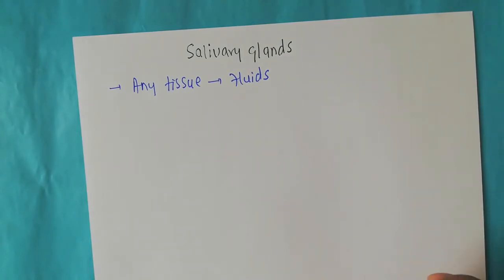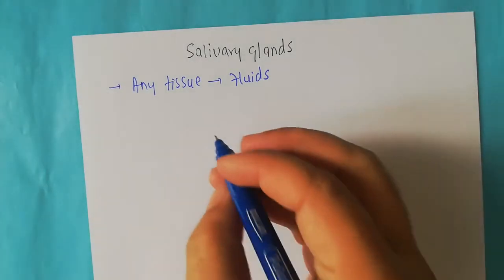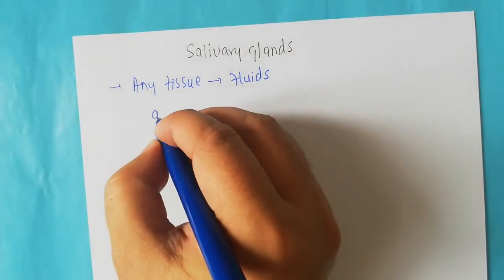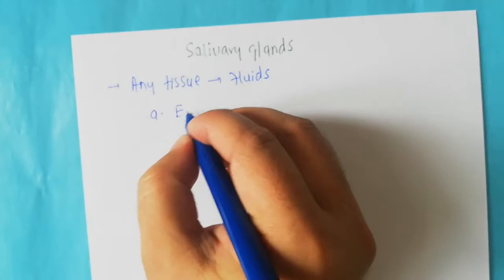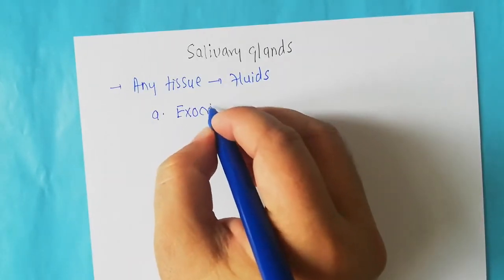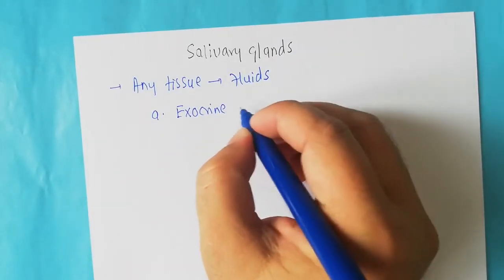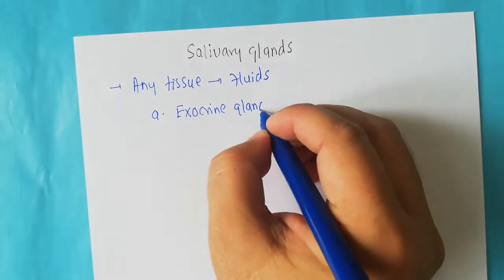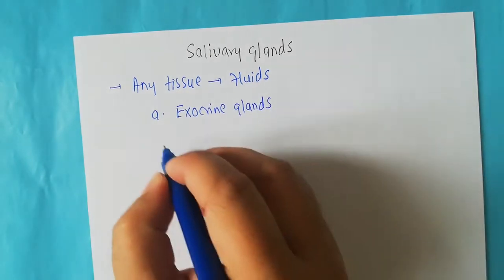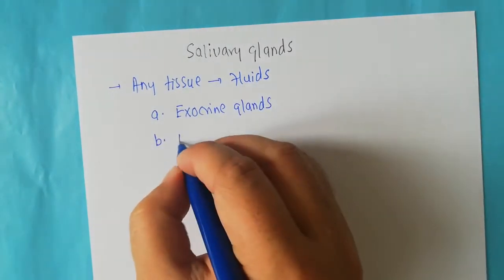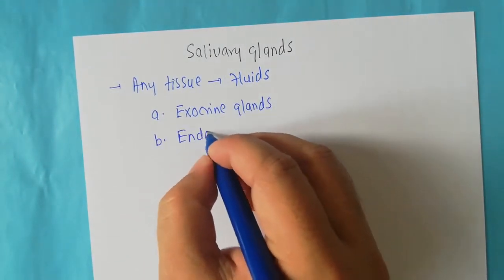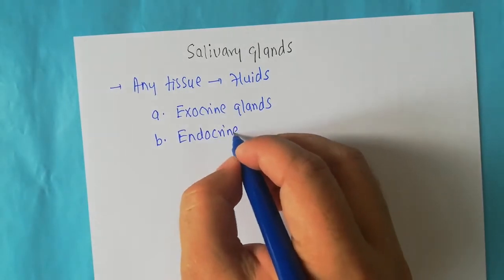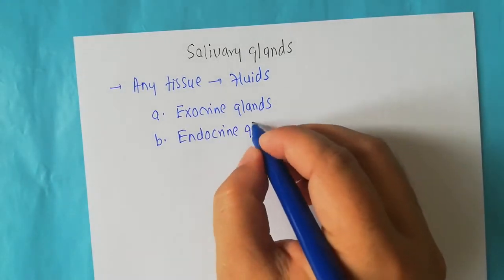In the human body, these glands are of two types. The first one is known as the exocrine glands and the second one is known as the endocrine glands. So these are the two major types of glands found in the human body.